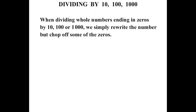Now in this lesson we look at what happens when dividing by 10, 100 or 1000. When dividing whole numbers ending in zeros by 10, 100 or 1000 we simply rewrite the number but chop off some of the zeros. Let's see how it works.